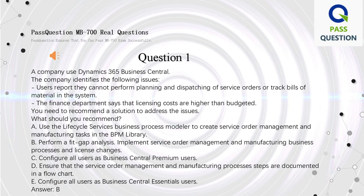A: Use the Lifecycle Services business process modeler to create service order management and manufacturing tasks in the BPM library. B: Perform a fit-gap analysis, implement service order management and manufacturing business processes, and license changes. C: Configure all users as Business Central Premium users. D: Ensure that the service order management and manufacturing process steps are documented in a flowchart. E: Configure all users as Business Central Essentials users. Answer: B.